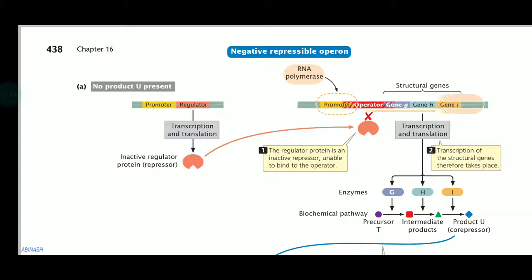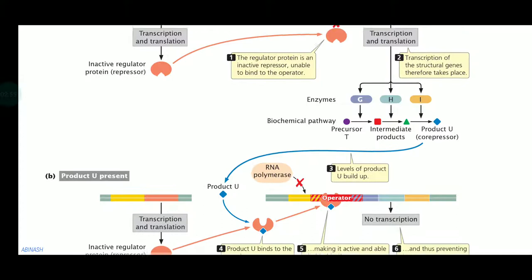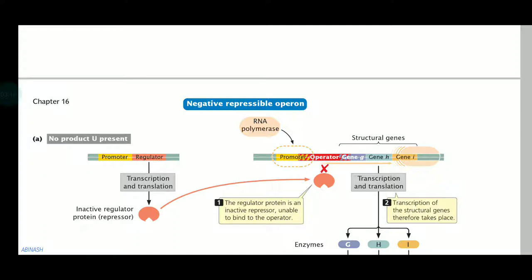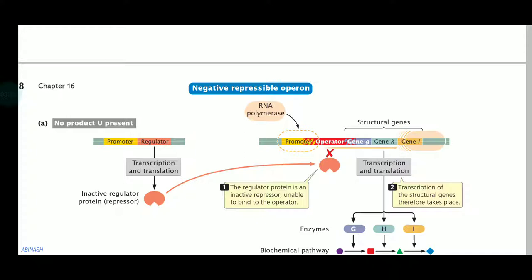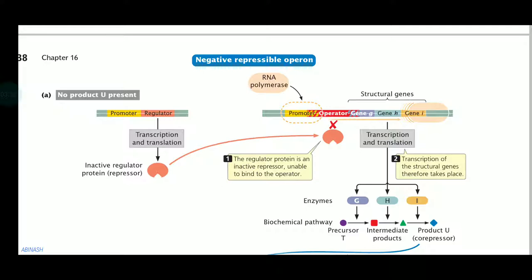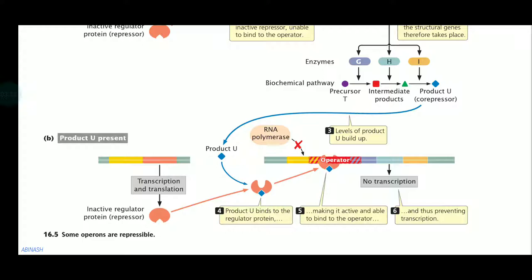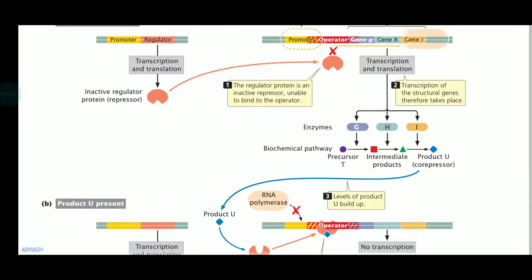The negative repressor operon — in this case, the product acts as a repressor molecule. So when the product gets bound with the inactive repressor protein, that will cause the operator to get blocked, preventing RNA polymerase from moving, and there will be no transcription. So in the negative repressor operon, the product acts as the repressor, and there will always be repression of protein formation when the regulatory product is present.